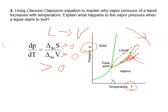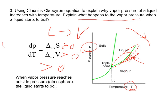Next, explain what happens to vapor pressure when a liquid starts to boil. A liquid starts to boil when its own vapor pressure equals the external surrounding pressure. For example, water's vapor pressure is very low at room temperature, but as temperature increases the vapor pressure increases until it reaches one atmosphere — that's when water starts to boil at 100 degrees Celsius.